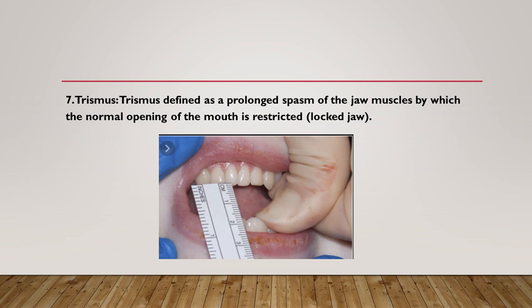Another complication is trismus, defined as a prolonged spasm of the jaw muscles by which the normal opening of the mouth is restricted. Causes include: trauma to the muscles due to injection of local anesthesia, muscle reaction to local anesthesia, hematoma and infection after injection, and excessive volume of local anesthesia. Prevention: use a sharp sterile needle, practice atraumatic insertion and injection technique, and avoid repeated injections and multiple insertions into the same area.